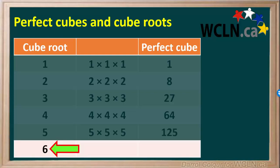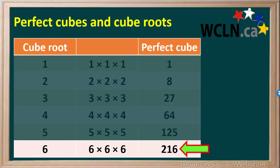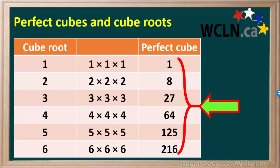The last integer cube root we'll look at here is 6. 6 cubed is 6 times 6 times 6, which is 36 times 6, or 216. So 6 cubed is the perfect cube 216, and the cube root of 216 is equal to the integer 6. Knowing these 6 perfect cubes and their cube roots is very handy — they are commonly used, and it's very helpful to memorize them.